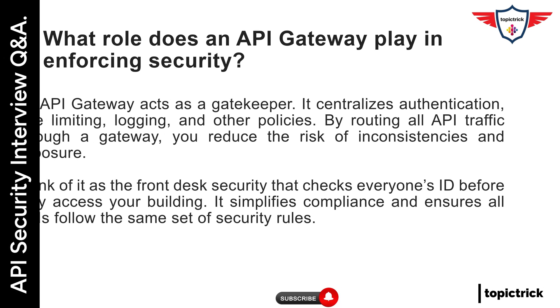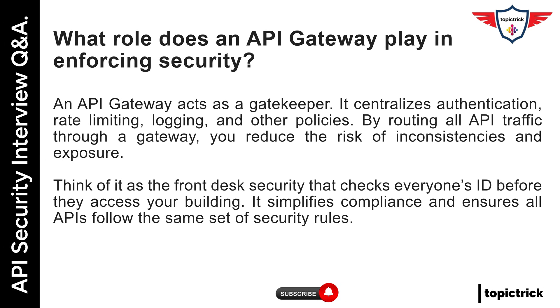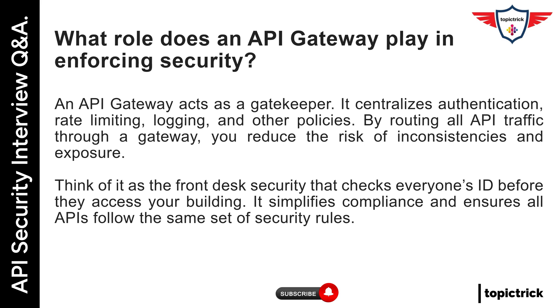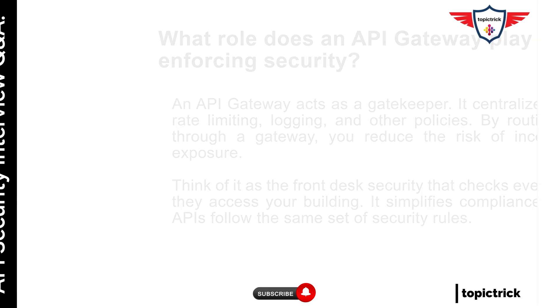What role does an API gateway play in enforcing security? An API gateway acts as a gatekeeper. It centralizes authentication, rate limiting, logging, and other policies. By routing all API traffic through a gateway, you reduce the risk of inconsistencies and exposure. Think of it as the front desk security that checks everyone's ID before they access your building. It simplifies compliance and ensures all APIs follow the same set of security rules.